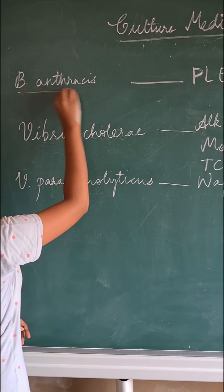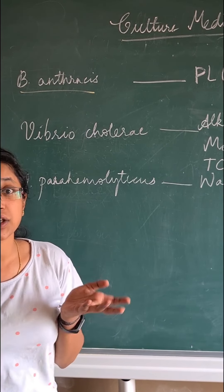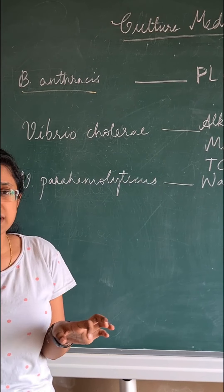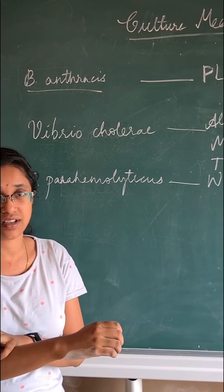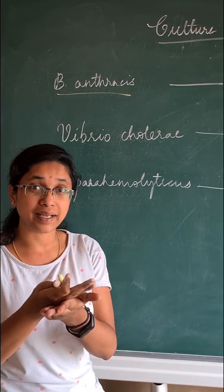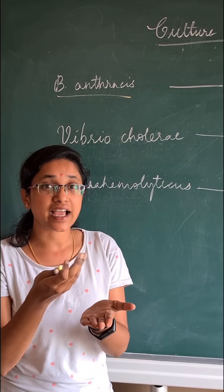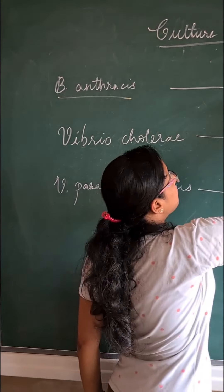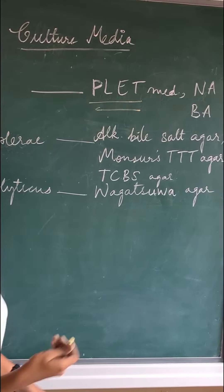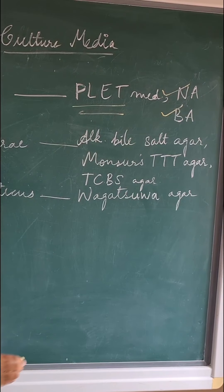For Bacillus anthracis: anthrax causes cutaneous anthrax and gives a black lesion on the skin. This black lesion is like a plate, so remember it as plate medium — that is PLET medium. Other media are nutrient agar and blood agar.